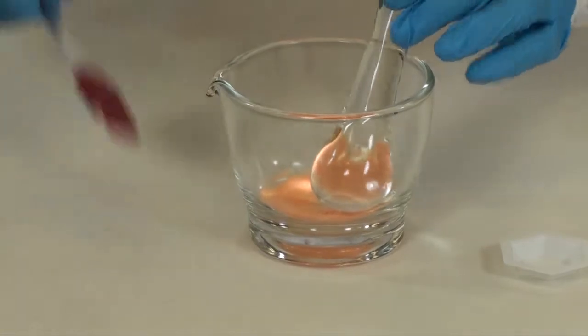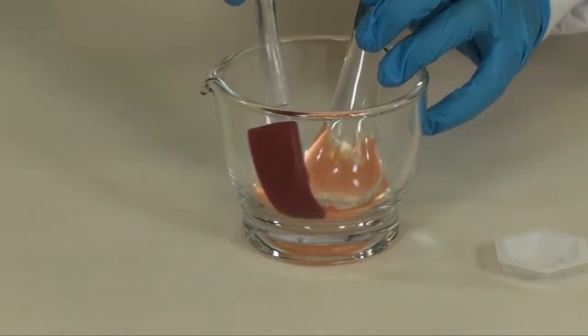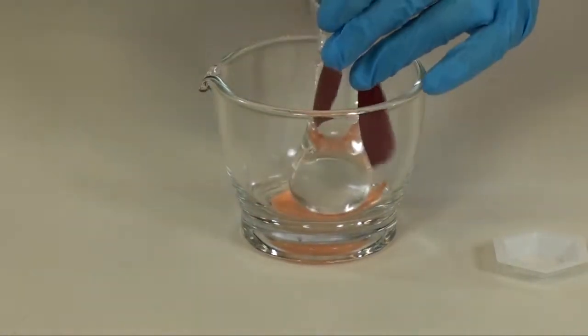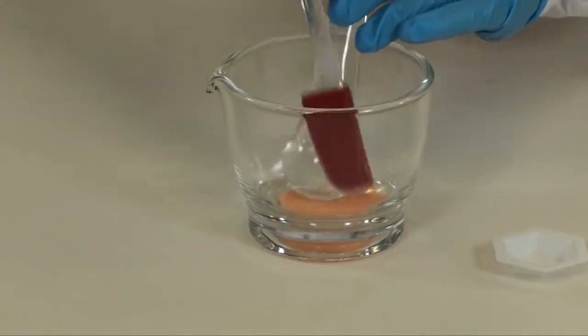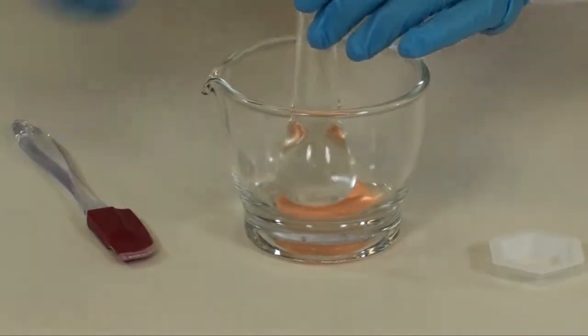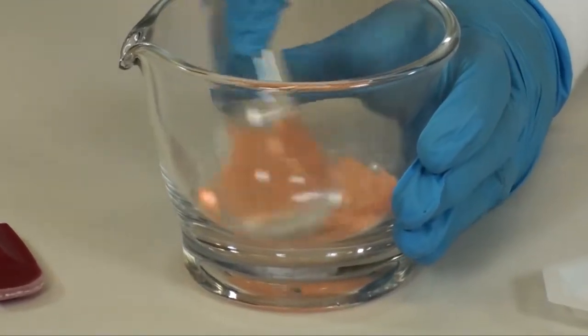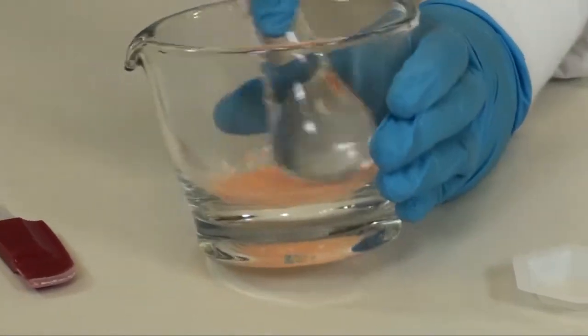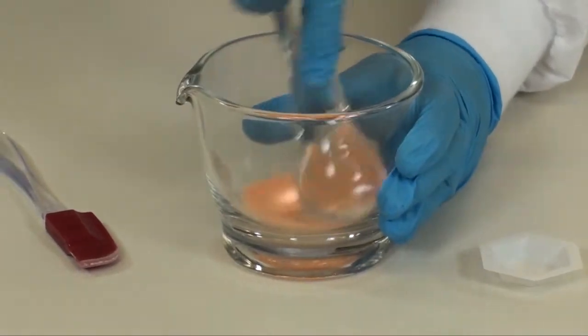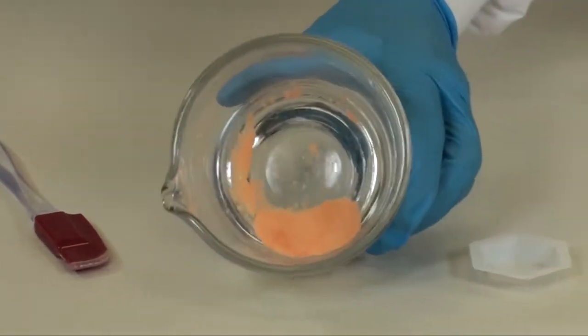You still need to triturate to a fine powder. If you need to scrape the powder down from the sides of the mortar, use your plastic spatula to move the powder back to the center of the mortar. After vigorous trituration, you will have a very fine powder.